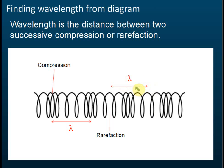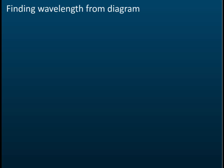Usually we use compressions to find our wavelength — we seldom use rarefactions because it's quite hard to identify where the rarefactions are. So usually we use compressions to identify our wavelength. This is how to find wavelength from a longitudinal wave.